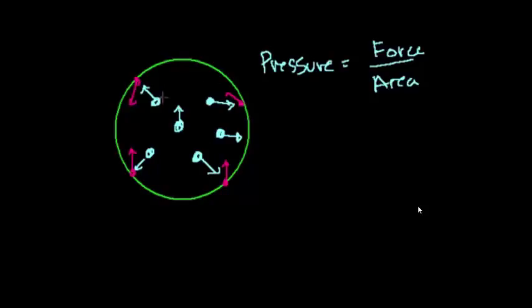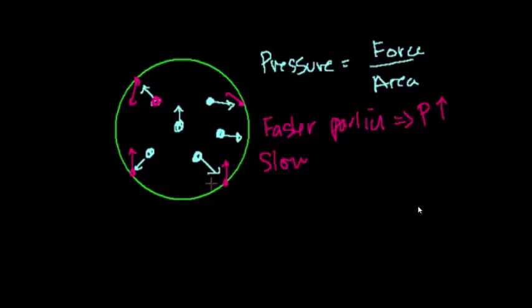So let's think about what the pressure is going to be dependent on. First of all, the faster these particles move, the higher the pressure. Faster particles would imply pressure would go up. Slower particles, you're going to be bouncing into the container less, and when you do bounce into the container it's going to be less of a ricochet, less of a change in momentum. So slower particles, pressure would go down.